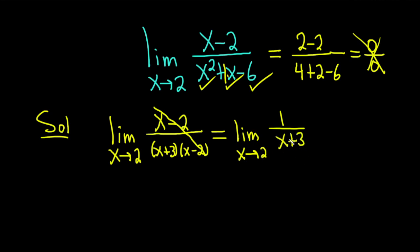At this point, we can actually plug in the 2 and there's no division by 0. We drop the limit sign. We get 1 over, and then x plus 3, so we have 2 plus 3. And 2 plus 3 is 5, so we just get 1 over 5.